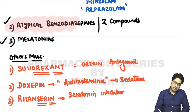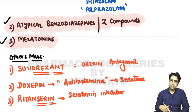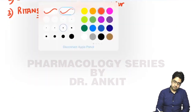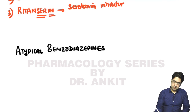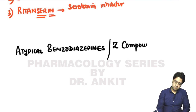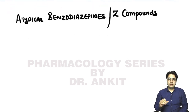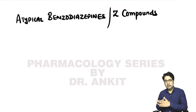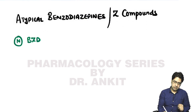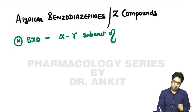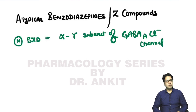Now let us discuss atypical benzodiazepines in detail. Atypical benzodiazepines are also known as Z compounds. A normal benzodiazepine acts on the alpha-gamma subunit of the GABA-A chloride channel, and this alpha subunit is of two types: alpha-1 and alpha-2.